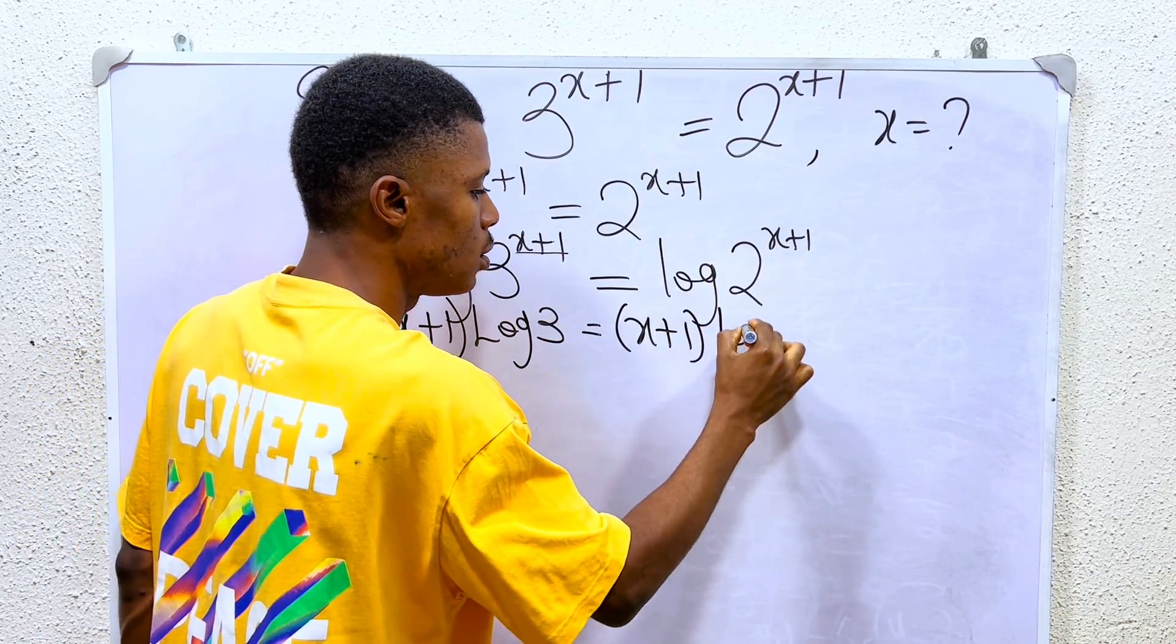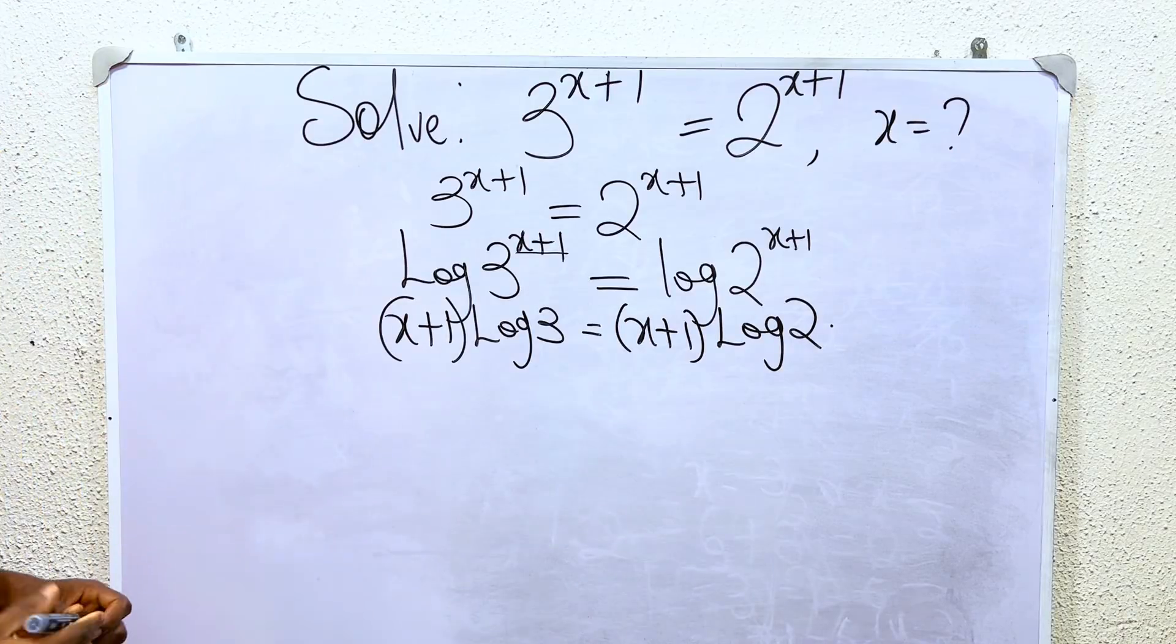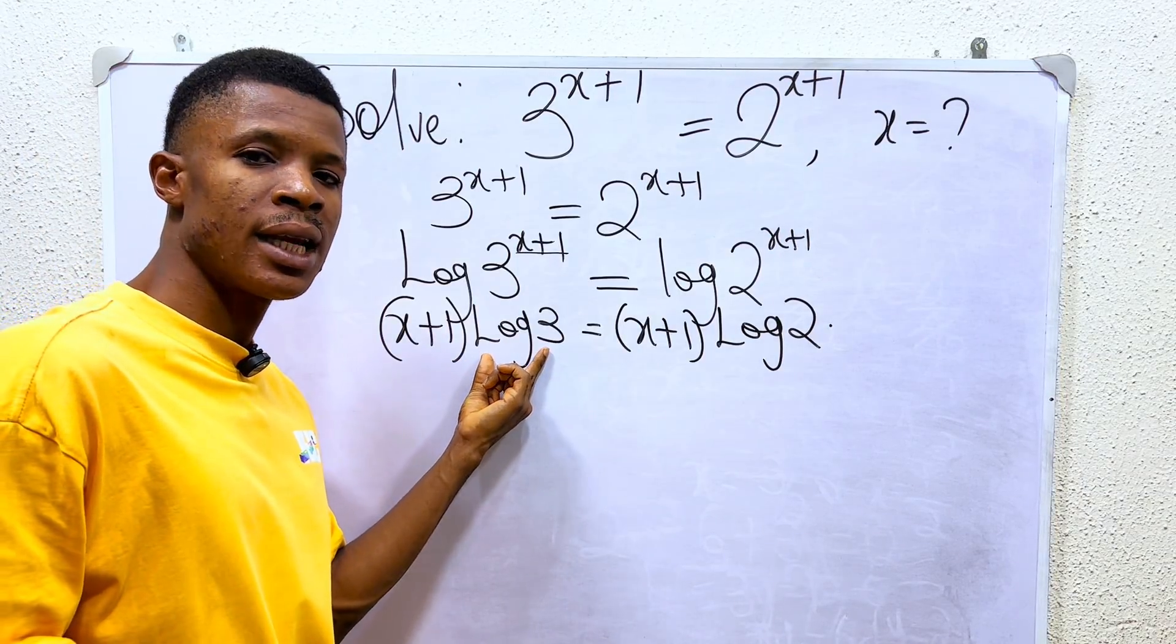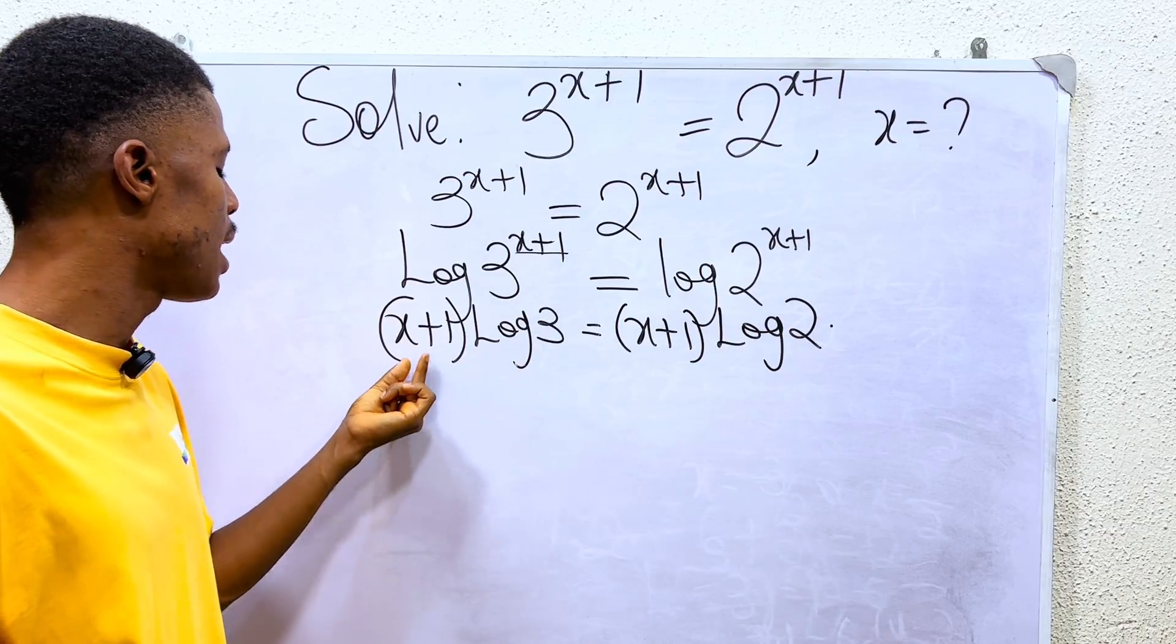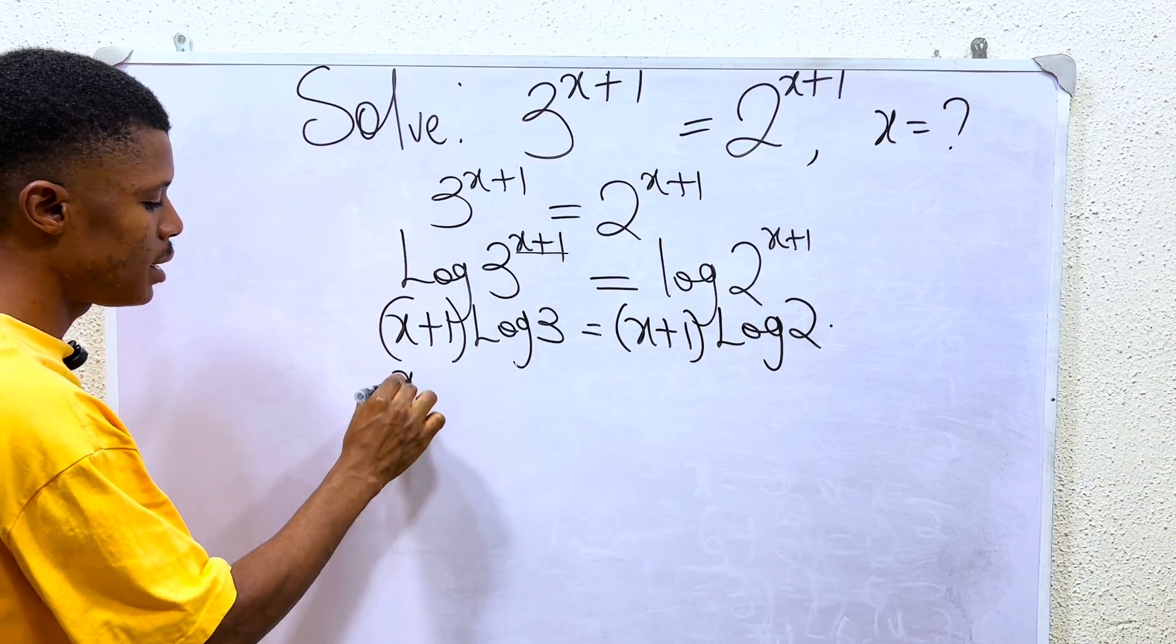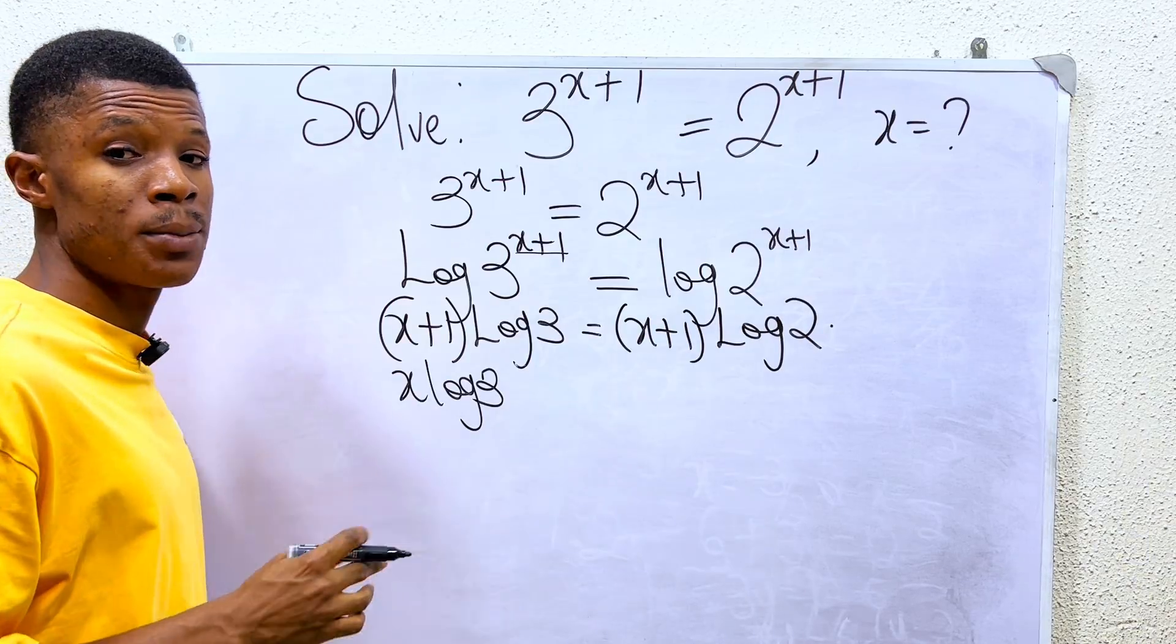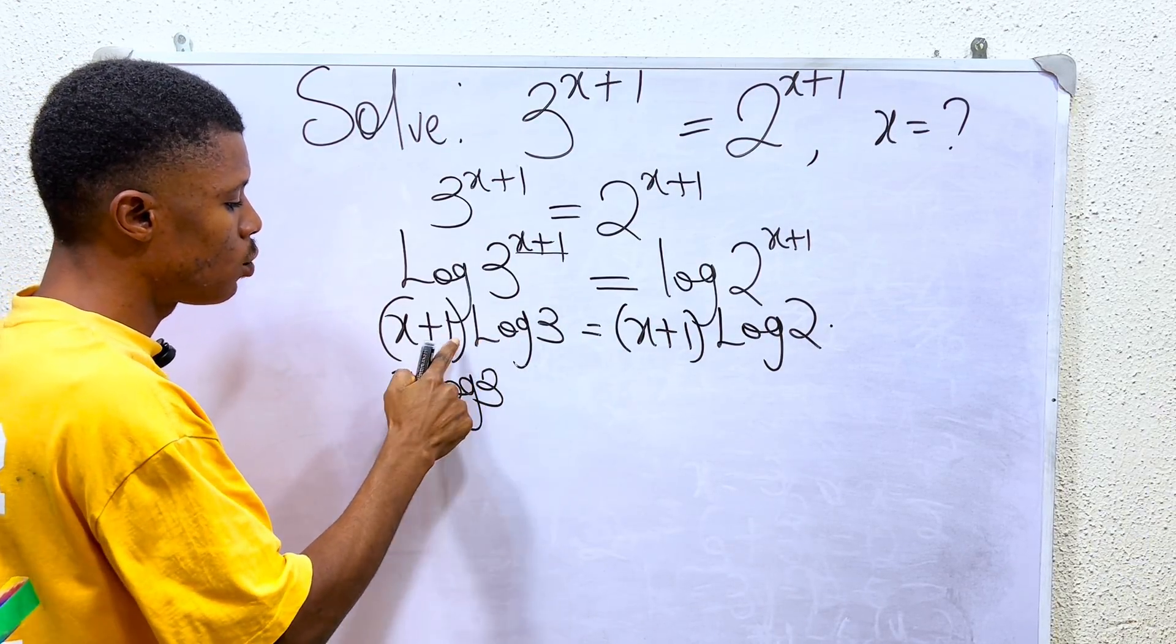Okay, since we have this, the next thing we do is to open the bracket. So I have to use log 3 to multiply the terms in the bracket, so log 3 times x is gonna give me x log 3. Please do subscribe to my channel, like also and share.